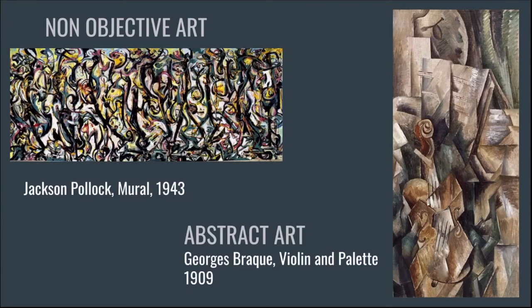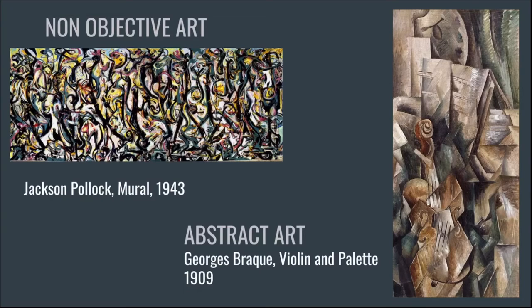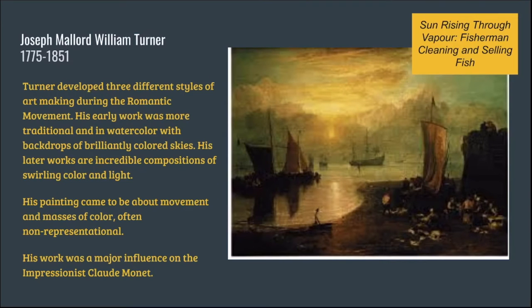Here are some examples — one by Jackson Pollock, another by Georges Braque — of the difference between non-objective art and abstract art. I want to consider the history of where we've been with abstract art and where we are now with contemporary art, so I'm going to take several minutes to look at the timeline, starting with William Turner.